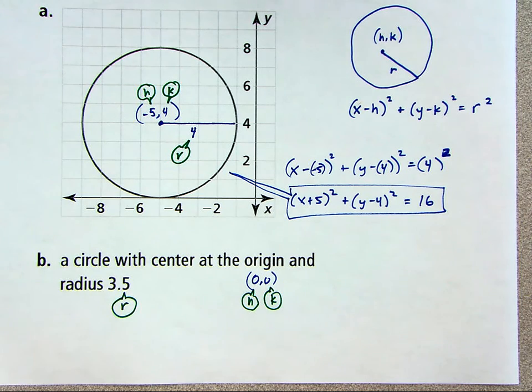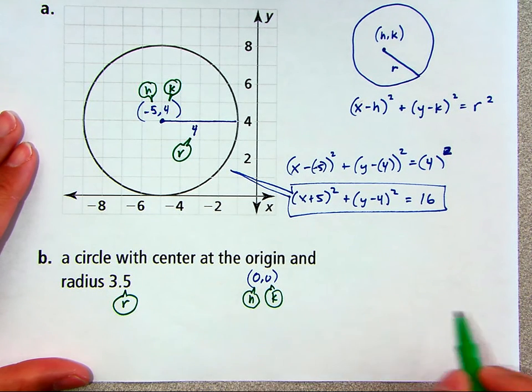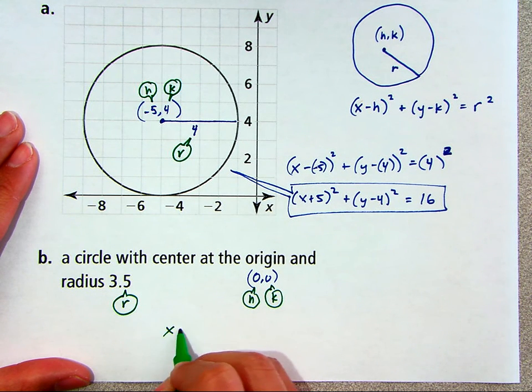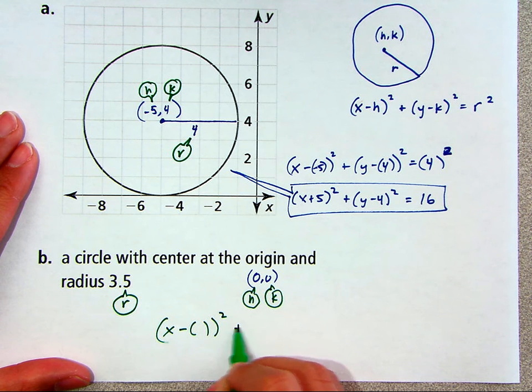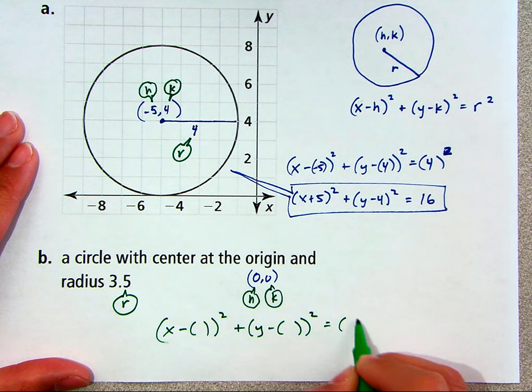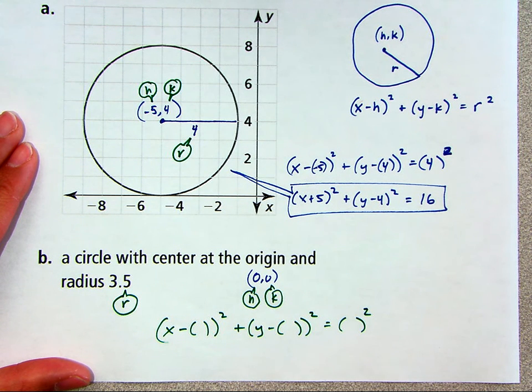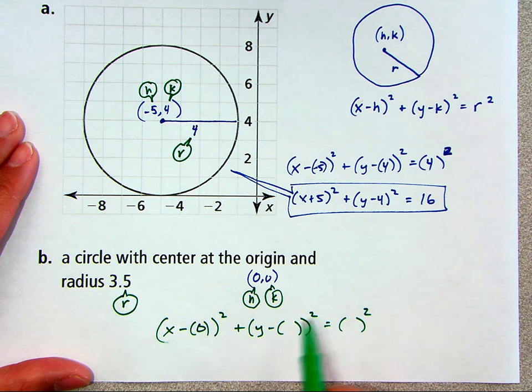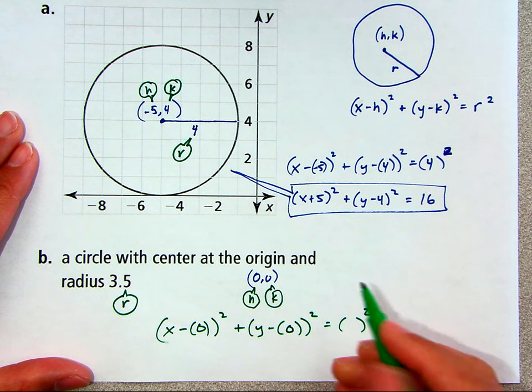So I'll just start with the general formula. x minus h squared plus y minus k squared equals r squared. So I just replaced each of those letters, h, k, and r, with placeholders, empty parentheses, and now I'll substitute the values. h is 0, k is 0, the radius is 3.5.